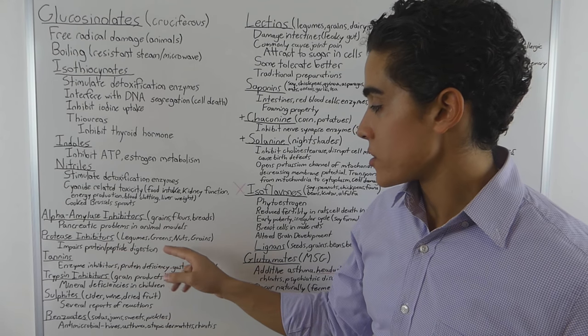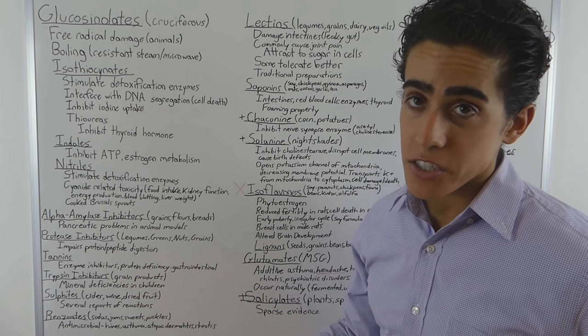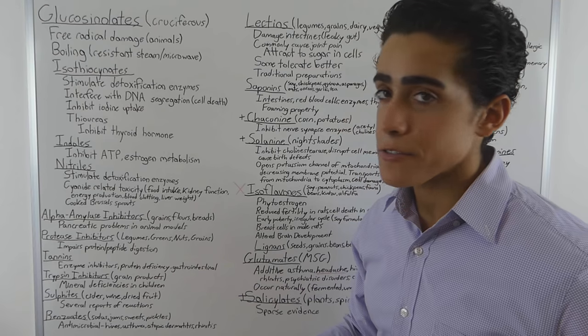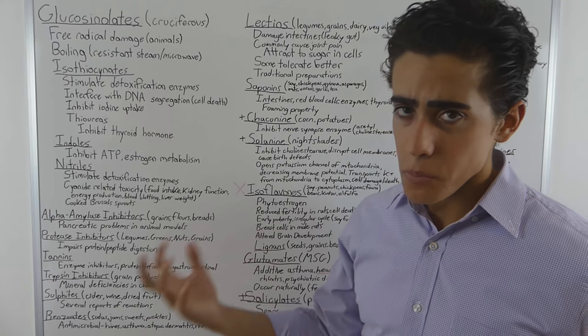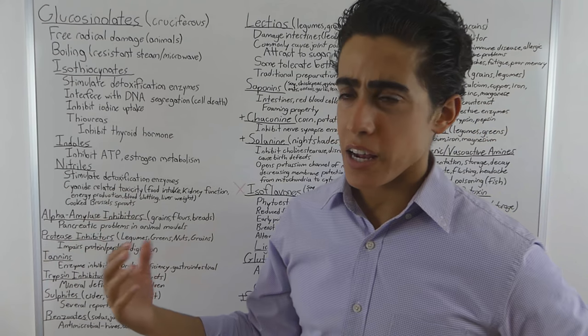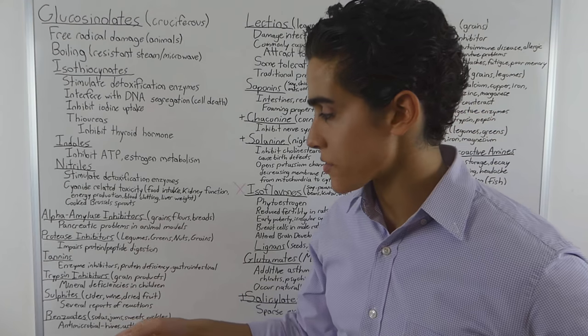Protease inhibitors found in legumes, greens, nuts, and grains. Impair protein and peptide digestion. Could be a reason a lot of vegans need to consume protein powders to not be deficient in protein. And also probably why a lot of vegans have naturally lower muscle mass if they're not taking steroids and lifting weight.